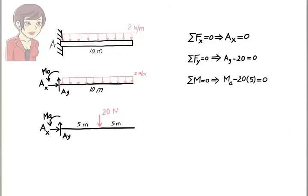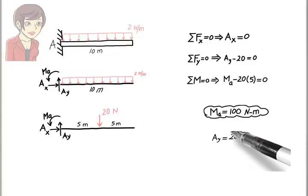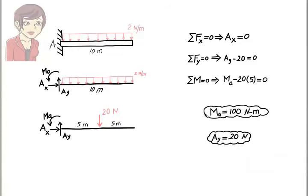Solving the last equation for MA gives MA equals 100. From the second equation, we get AY equals 20. And the first equation gives us AX equals zero.